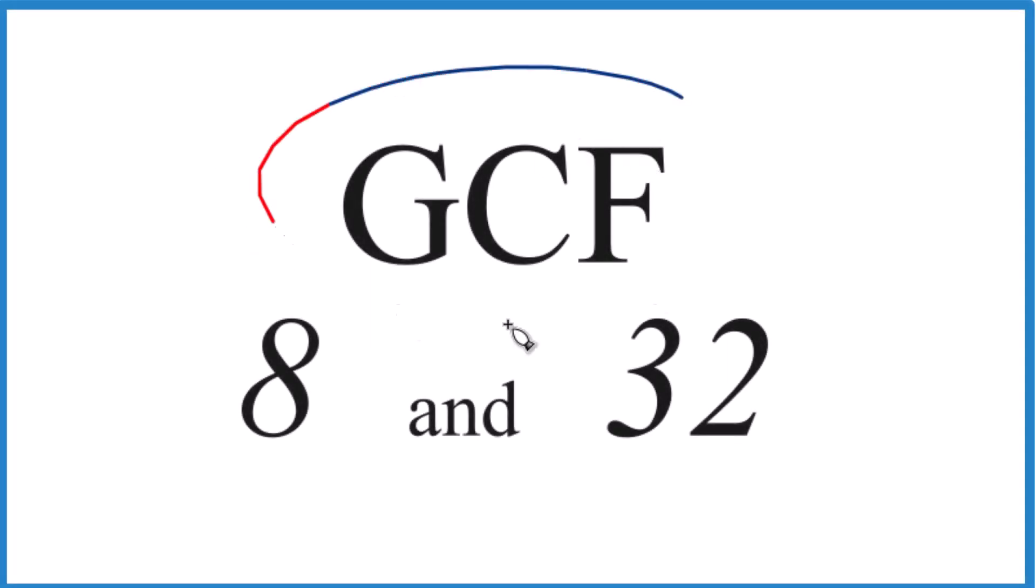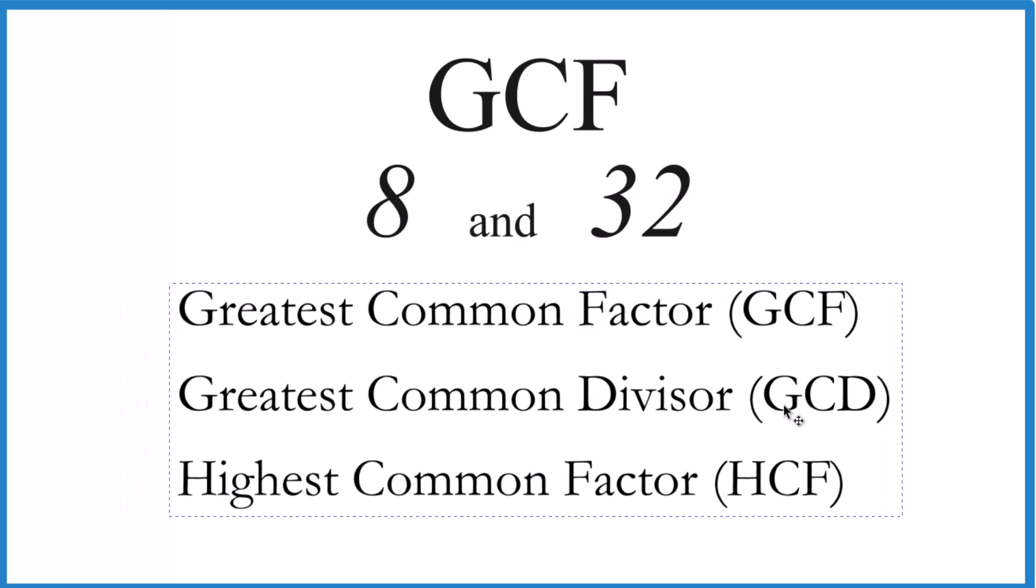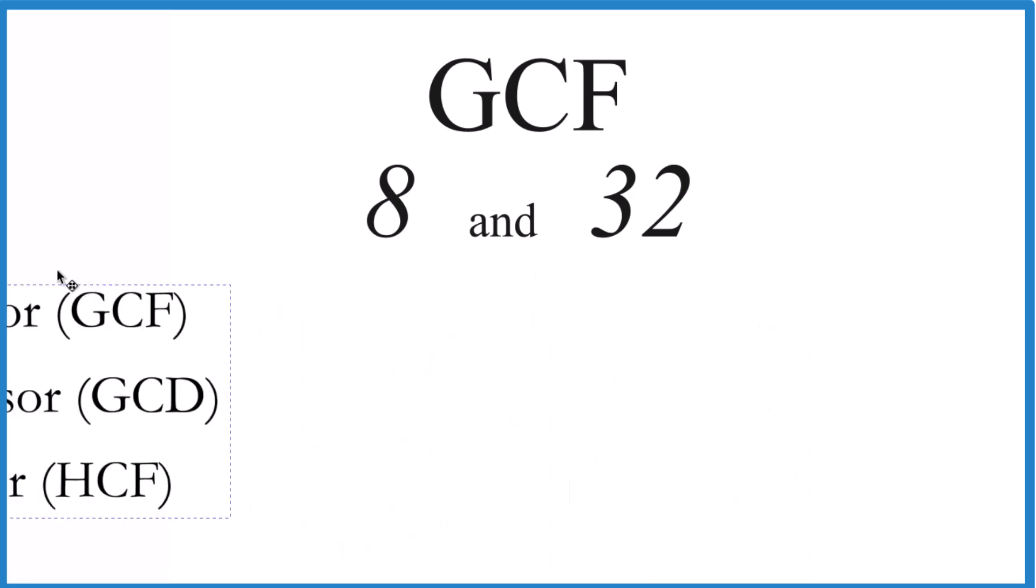Let's take a look at how we find the greatest common factor, the GCF, for 8 and 32. So the GCF, it's also called sometimes the greatest common divisor and the highest common factor. These are all the same thing. I like greatest common factor, the GCF, so we'll go with that.